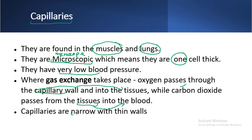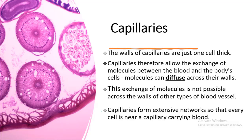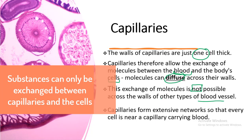Capillaries are narrow and have thin walls, which allow rapid diffusion of substances. The walls are just one cell thick, allowing the exchange of molecules between the blood and the body's cells by diffusion. This exchange is not possible across the walls of arteries or veins, which are too thick — substances can only be exchanged between capillaries and cells.